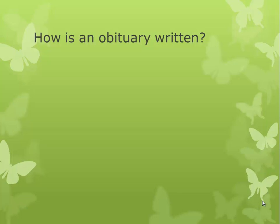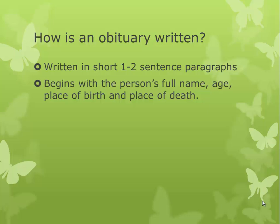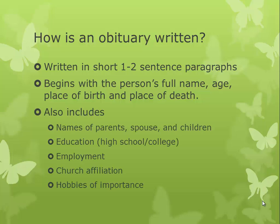How is an obituary written? It's written in short one to two sentence paragraphs. It begins with the person's full name, age, place of birth, and place of death. It also includes the names of their parents, spouse, and children; their education, where they may have gone to high school or college; their employment, especially if they were employed in one place for a very long period of time; a church affiliation, any place where they attended church, if they did anything special at their church; and any hobbies of importance to them.